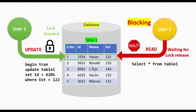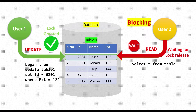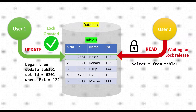The User 1 transaction is not yet committed or rolled back — it is an open transaction. Once the transaction is completed successfully by User 1, the lock will be released and User 2 can access the resource without any blocking. User 2 will acquire its own lock and can access the resource.